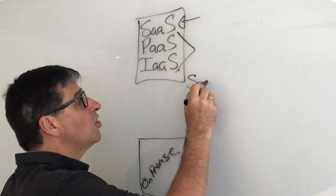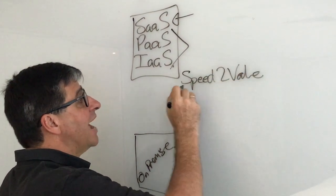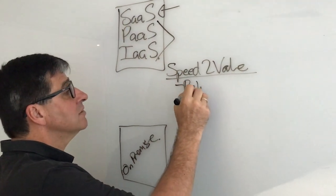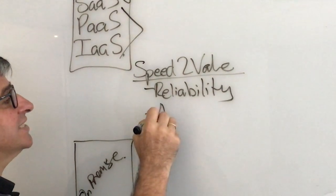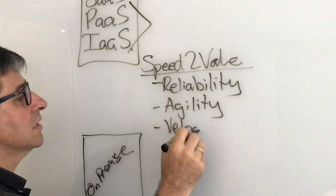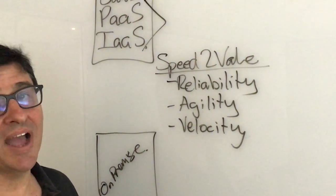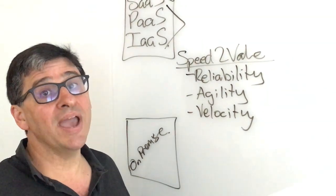If I were to summarize that, it's been predominantly around speed to value. How do I define speed to value? It's reliability, agility, and velocity, and that just continues to accelerate and become stronger in this new cloud world where we expect to do things at cloud speed.